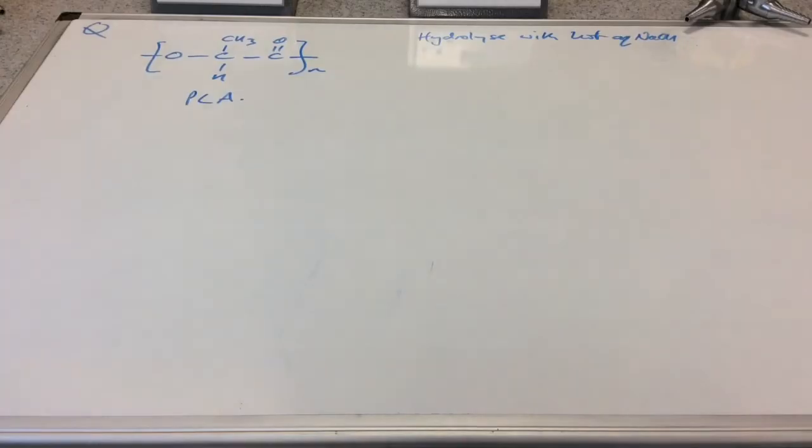Just like before, we're going to apply this now to polylactic acid. We need to hydrolyze this with hot aqueous sodium hydroxide. So what would the structure of the product look like? And what would the equation for the reaction look like?